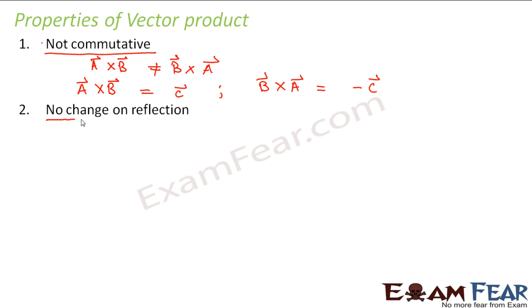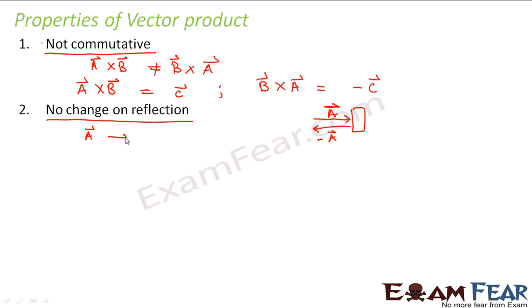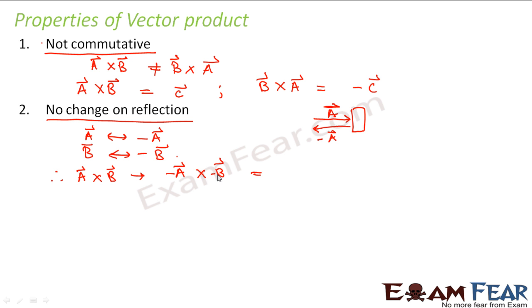The second property is there is no change on reflection. In reflection, if vector a strikes a mirror it becomes −a because the direction gets reversed. So upon reflection, a becomes −a and b becomes −b. Therefore a cross b becomes (−a) cross (−b), which is (−1)(−1)(a cross b) = a cross b. So there is no change in the cross product upon reflection.